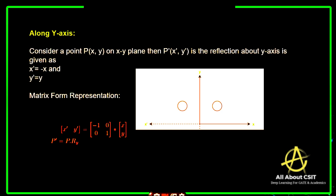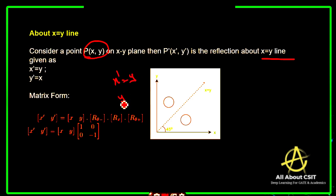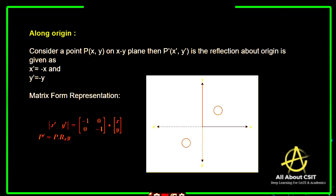If you want to reflect along the y-axis, y remains the same and x-dash becomes minus x. This is the matrix form representation along the y-axis. For reflection about the x equals y line, if you consider any point P(x, y) on the plane, then x-dash becomes y and y-dash becomes x — it simply swaps the coordinates. This is the matrix form representation for about the x equals y line.